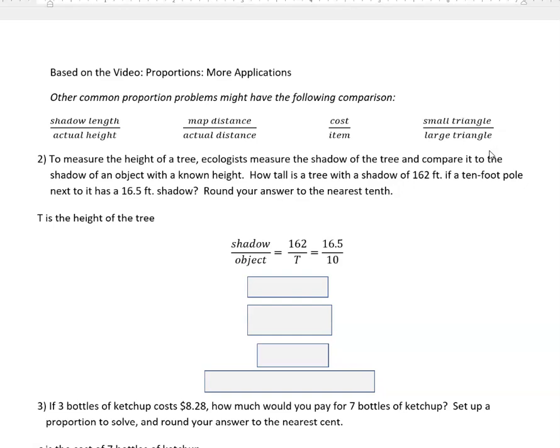The first one says to measure the height of a tree, ecologists measure the shadow of the tree and compare it to the shadow of an object with a known height. How tall is a tree with a shadow of 162 feet if a 10 foot pole next to it has a shadow of 16.5 feet?